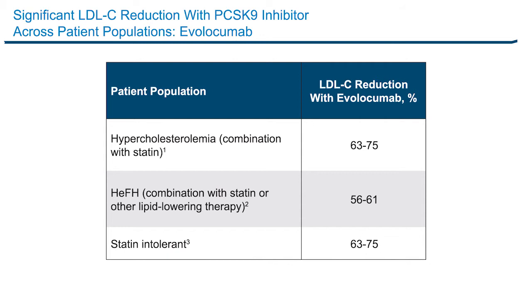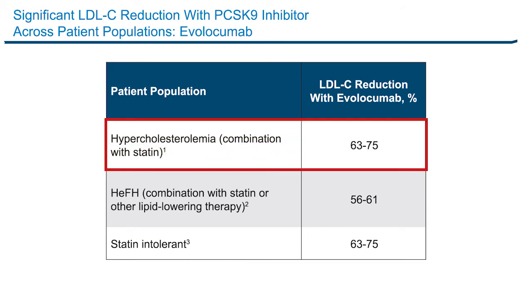Armed with that information, what are the data around these monoclonal antibodies — evolocumab and alirocumab? By and large, the pharmacologic properties are pretty similar, and they've been studied in a broad array of different patient populations. The one of greatest interest is the run-of-the-mill patient with hypercholesterolemia already treated with a statin. In these patients, evolocumab, for example, can reduce LDL cholesterol — on top of a statin — by about 60% to 75% or so. Dose-ranging studies including LAPLACE-TIMI 57 showed these results, confirmed in Phase III studies as well.